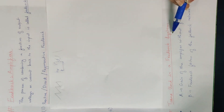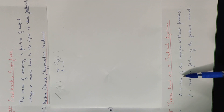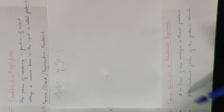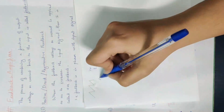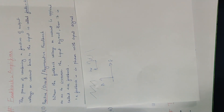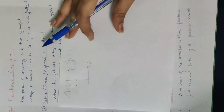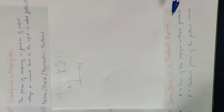Now let's talk about the terms used in a feedback system. Let's talk about the gain of the amplifier and the frequency response. Gain is represented as A, and frequency as F. We represent the frequency response on the x-axis and the gain A on the y-axis.